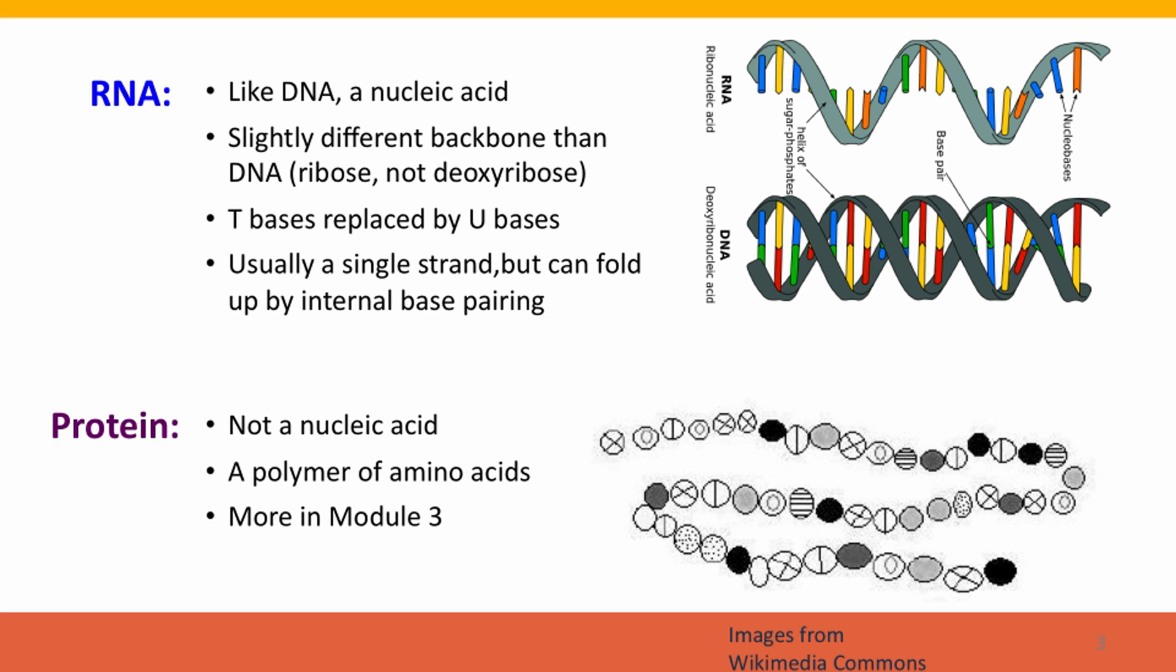Now, protein is a very different kind of molecule. It's not a nucleic acid at all. It's still a polymer, an informational polymer. It consists of subunits that are similar in their ability to form a chain but have different properties, and these subunits are called amino acids. We'll talk a lot more about proteins in Module 3. For now, all you need to know is that the proteins are the enzymes and the structures. Almost all of the working parts of the cell are protein.